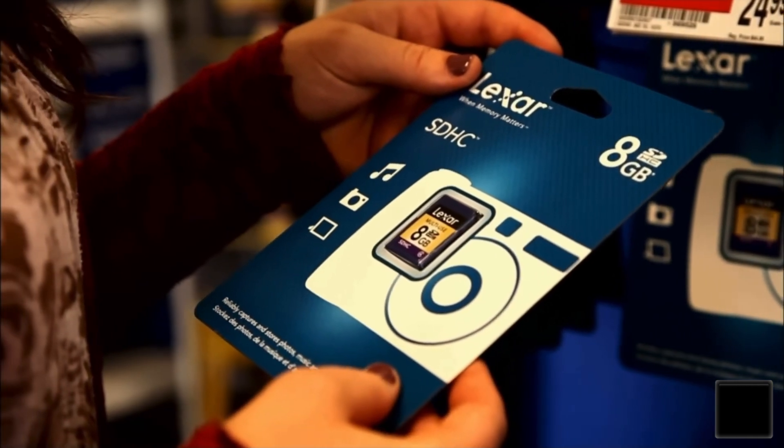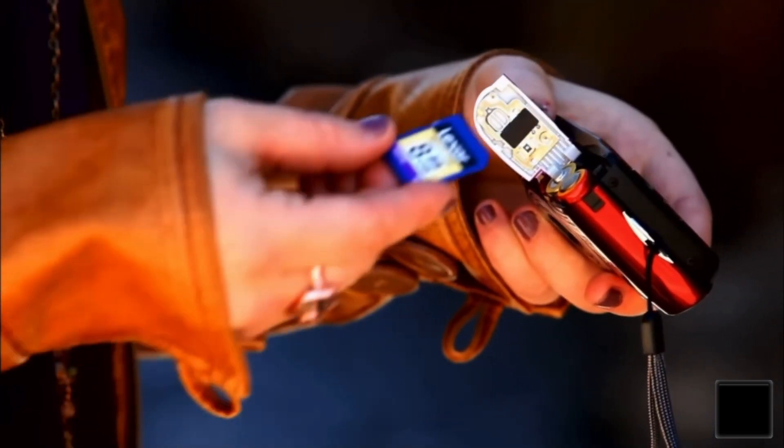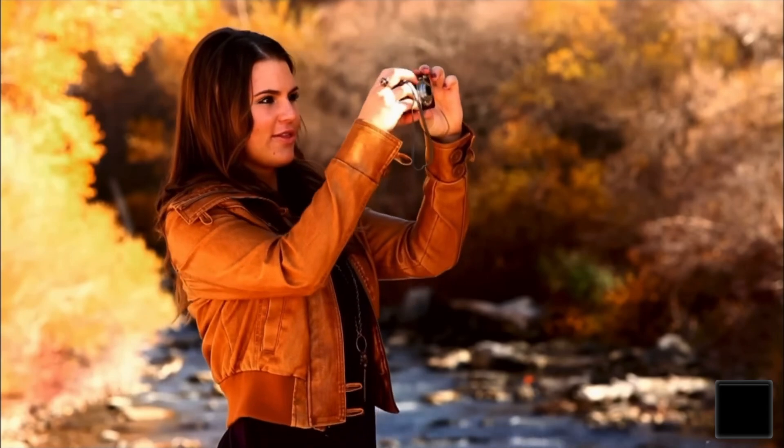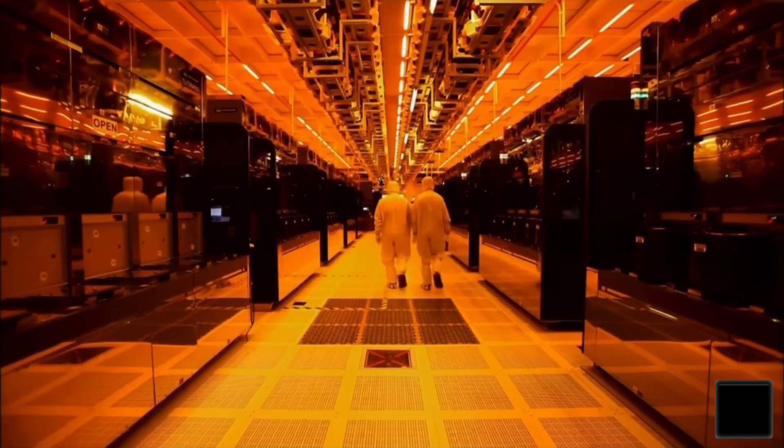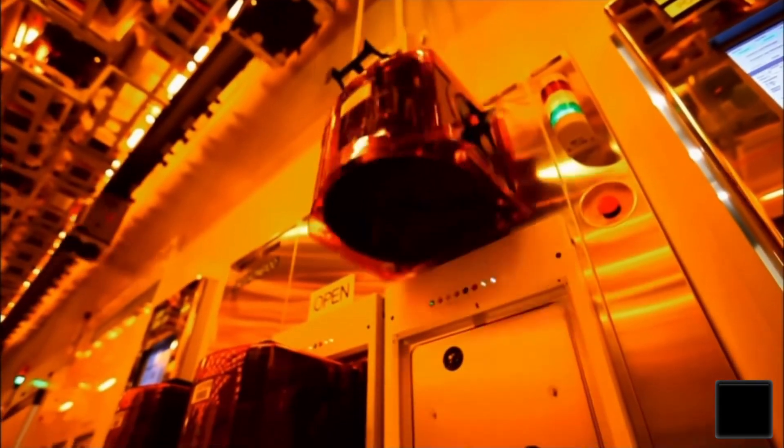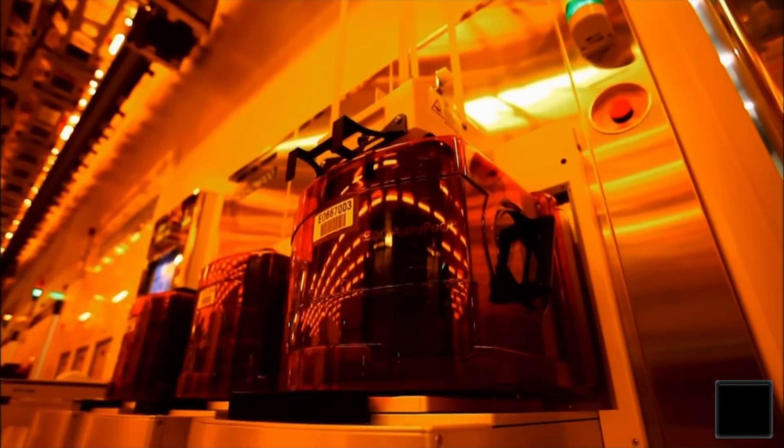A memory card fits into a slot in your digital device. A flash drive plugs into a USB port. The key component of both formats? A memory chip, produced in a factory that's 1,000 times cleaner than a hospital operating room.